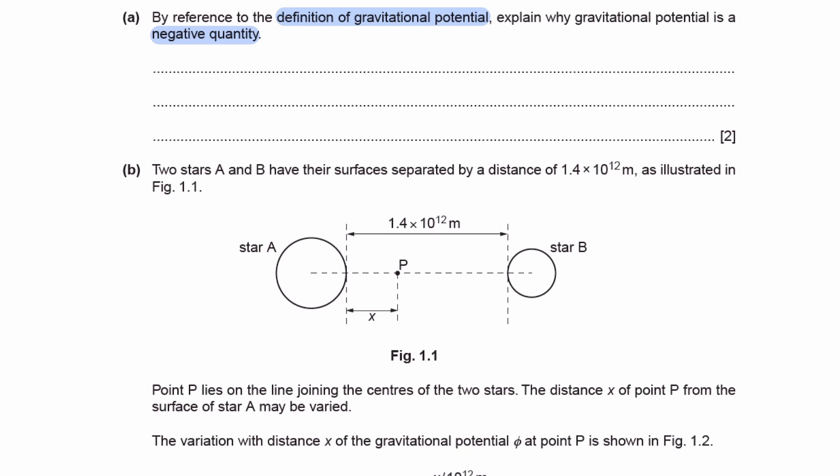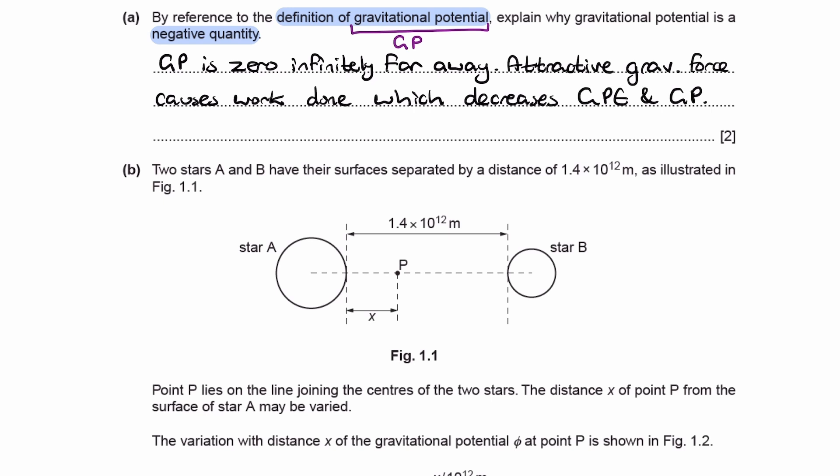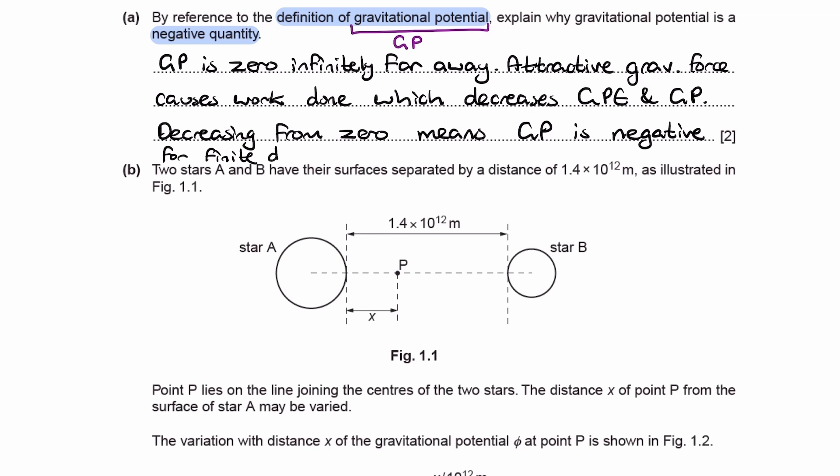Going back to what I said earlier — potential and potential energy are defined to be zero infinitely far away. So if this attractive gravitational force causes work done that decreases gravitational potential energy and therefore gravitational potential, and it's zero to begin with infinitely far away, now it's decreasing as the mass gets towards the Earth — that means for finite distances, gravitational potential and potential energy are negative. So to summarize: gravitational potential is zero infinitely far away by definition. The attractive gravitational force does work on the mass, causing gravitational potential to decrease. Decreasing from zero means gravitational potential is negative for finite distances.